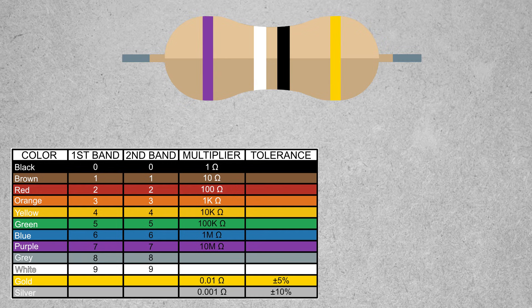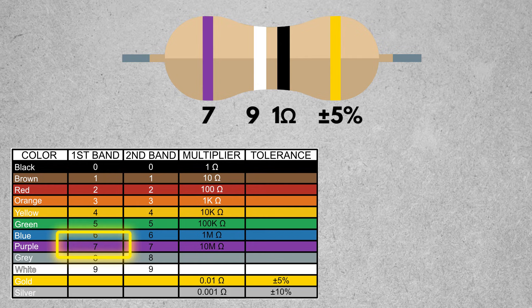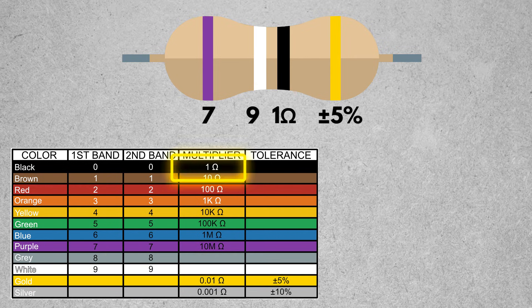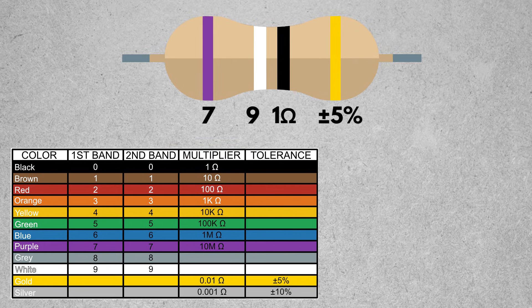If we take a look at this one, we have purple, white, black, and gold. Purple gives us a value of 7. White gives us a value of 9. And black again is a multiplier of 1, with our gold being our tolerance of plus or minus 5%.